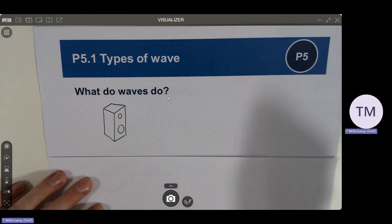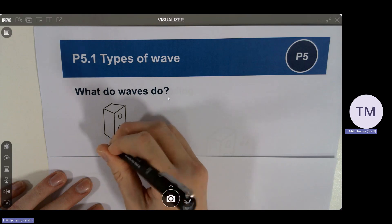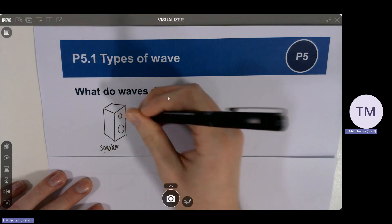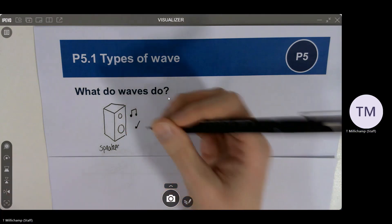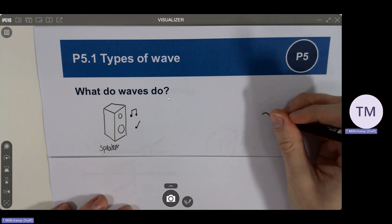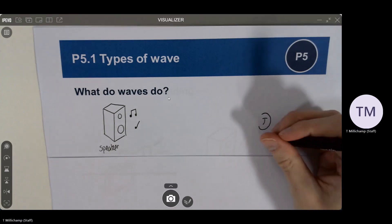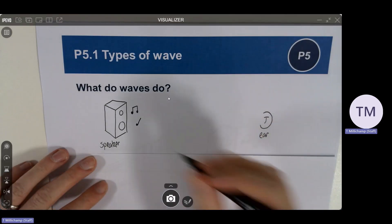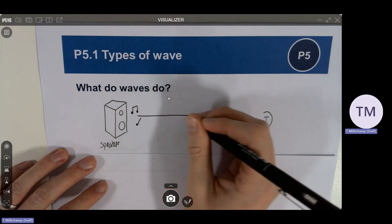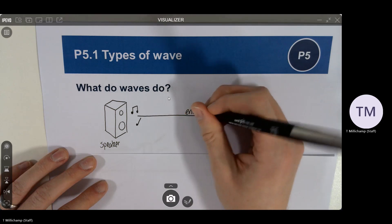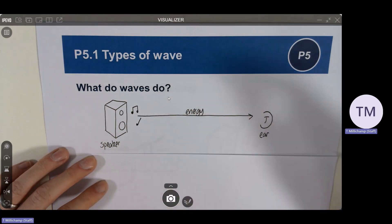In front of you we've got a speaker and we know that if I turn on a speaker it's going to give out or emit some sound. When we play the music from a speaker we can hear it even when we're really far away. That's meant to be an ear, and the reason that we can hear it is in the gap between the speaker and our ear there is a big transfer of energy.